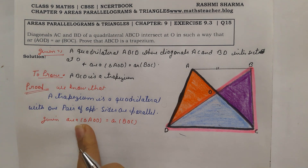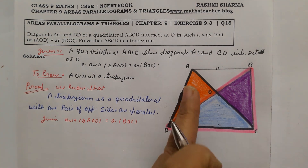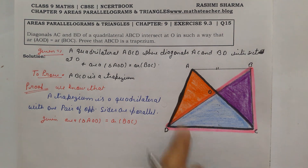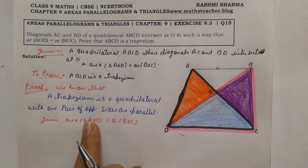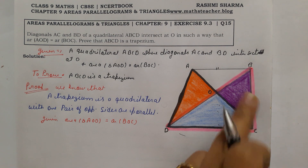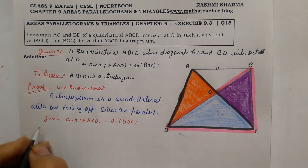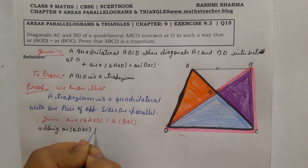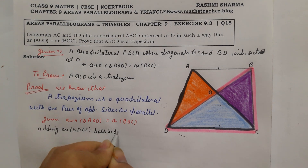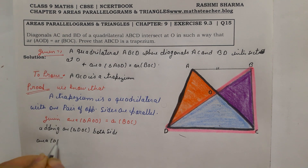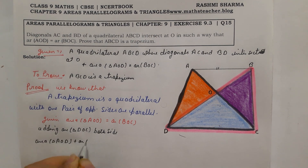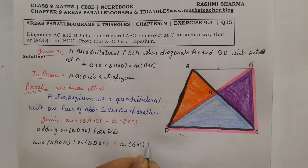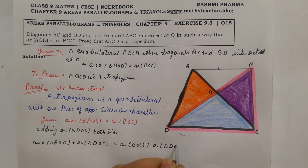We add the area of triangle DOC to both sides. So: area of triangle AOD plus area of triangle DOC equals area of triangle BOC plus area of triangle DOC.